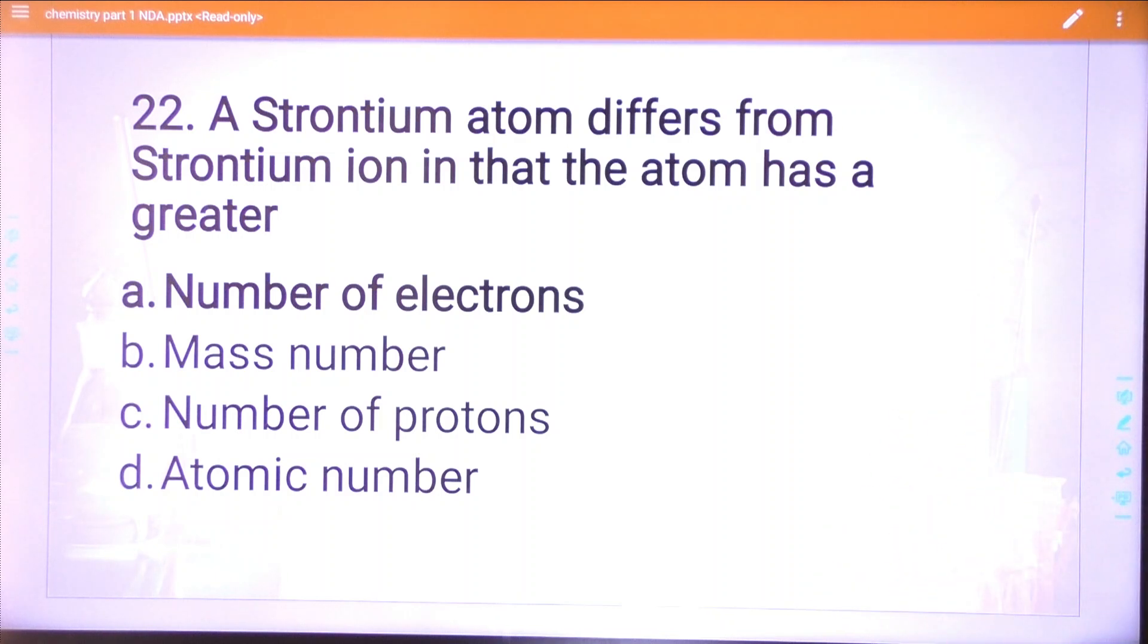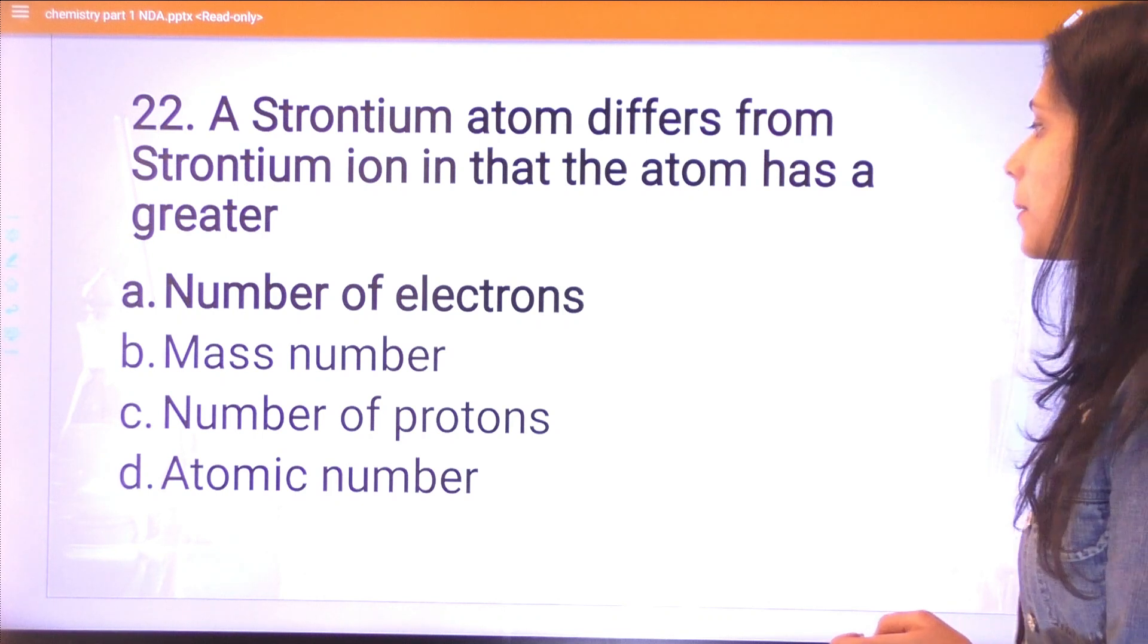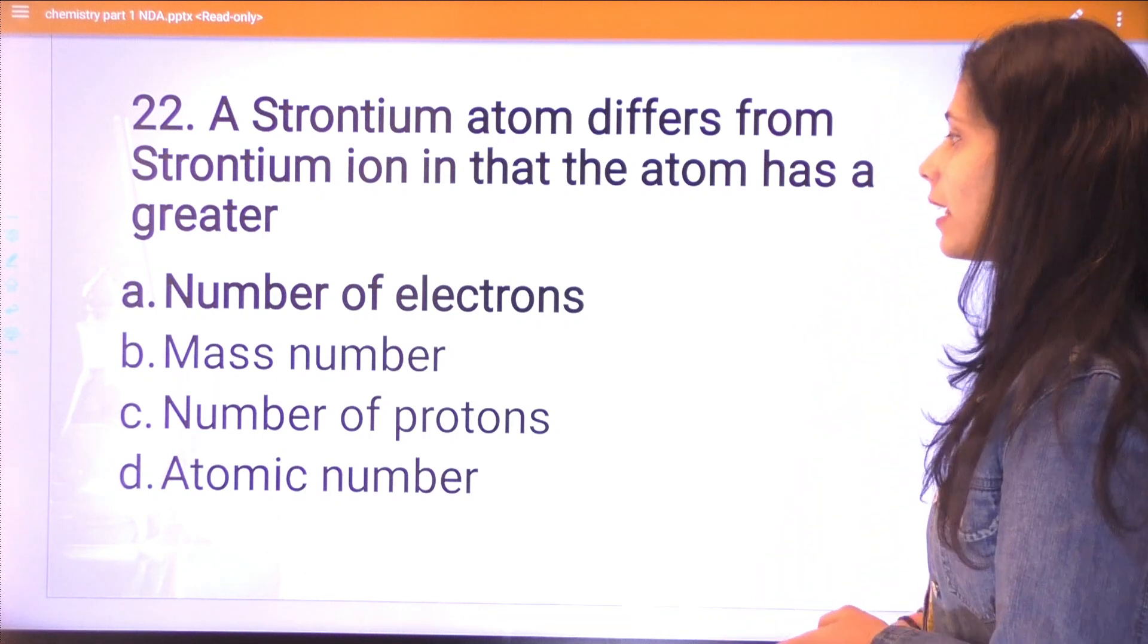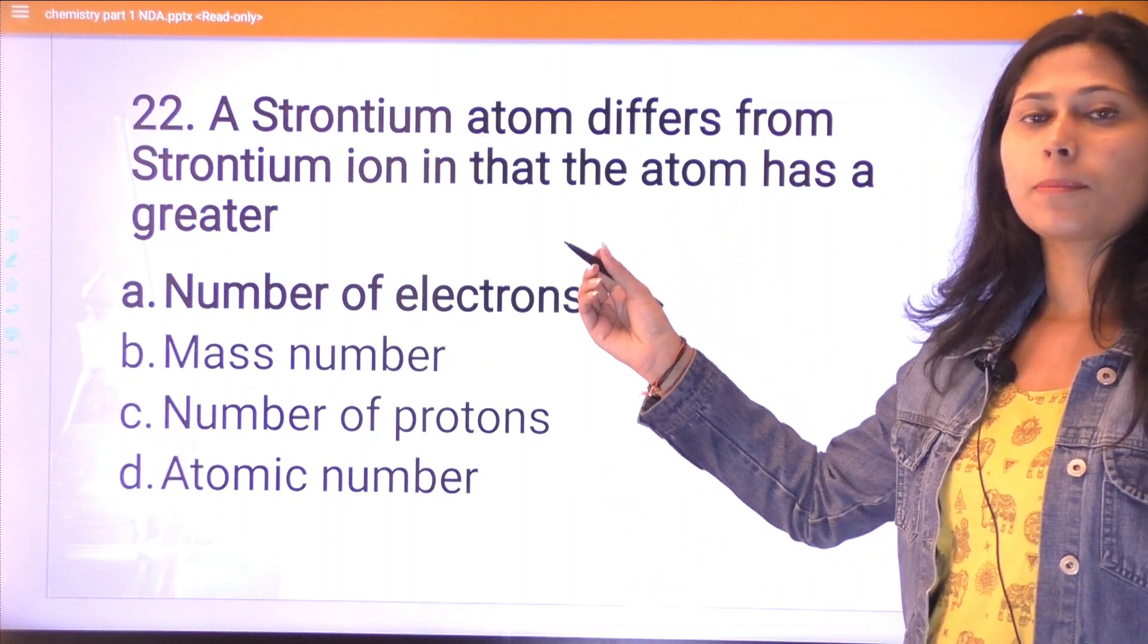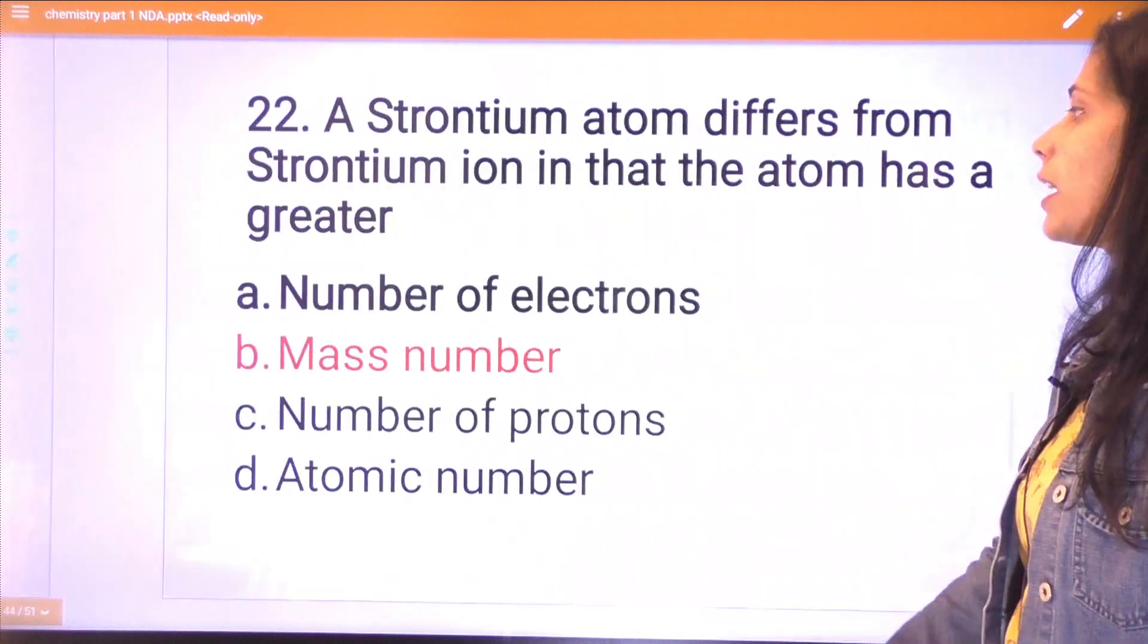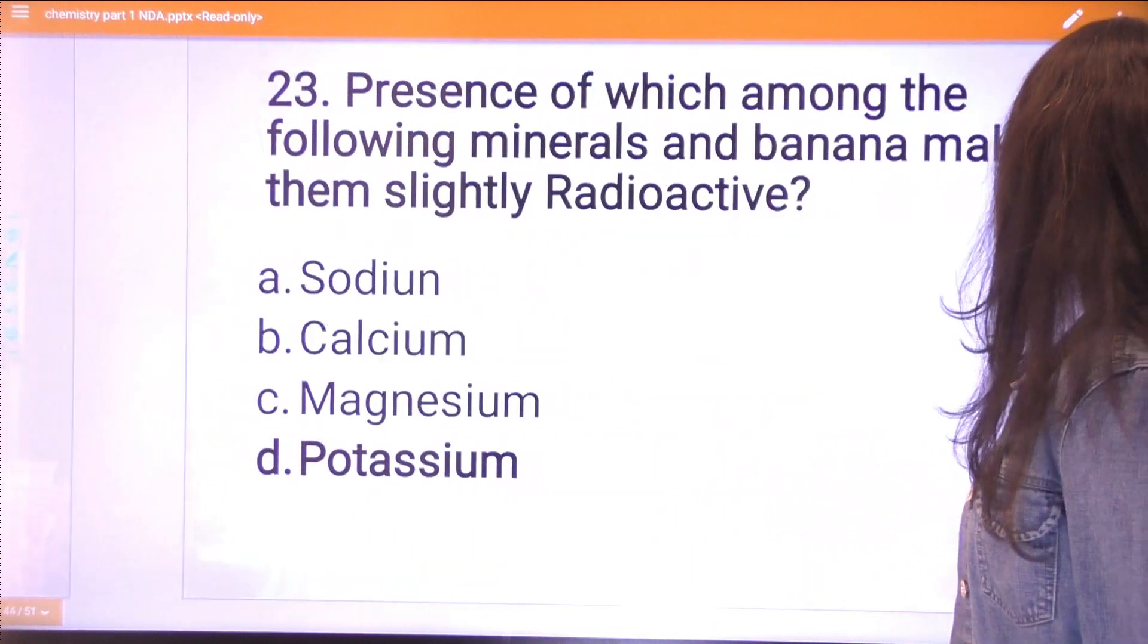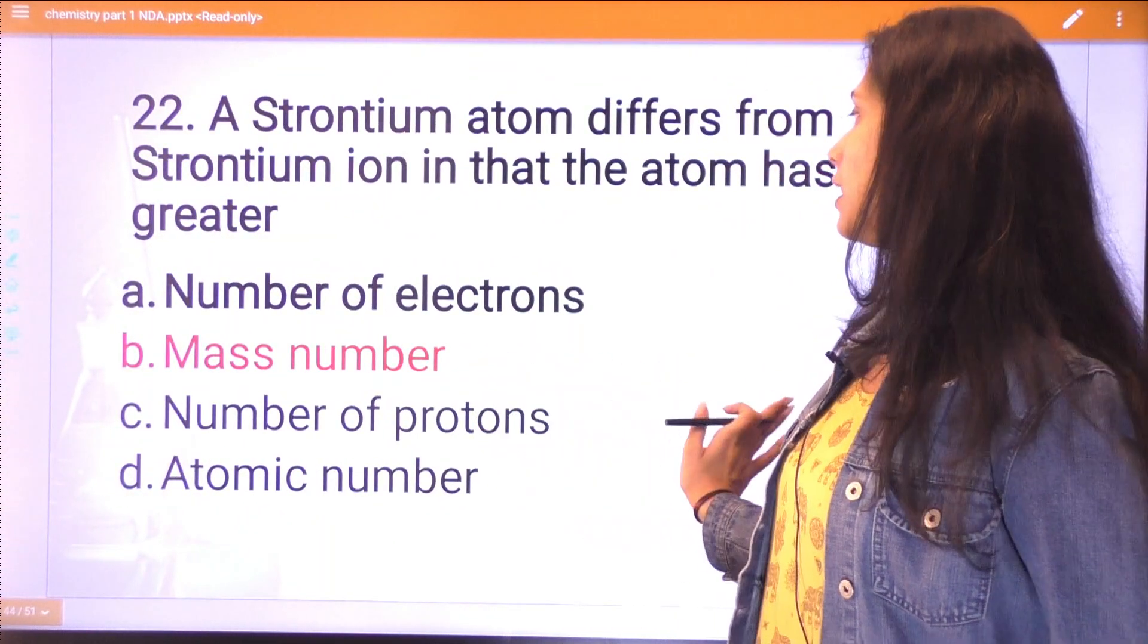Question twenty-two: a strontium atom differs from strontium ion because the atom has a greater number of electrons. In the ion, if there's a plus charge or minus charge, the number of electrons differs. The answer is number of electrons, not mass number.